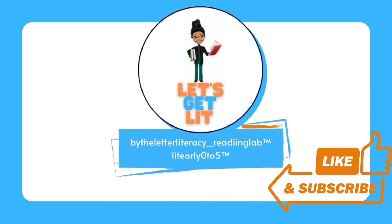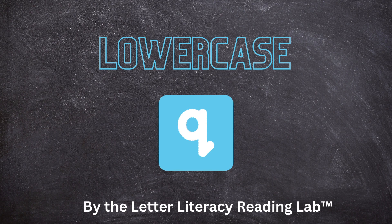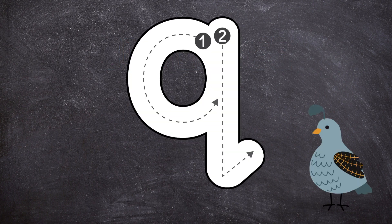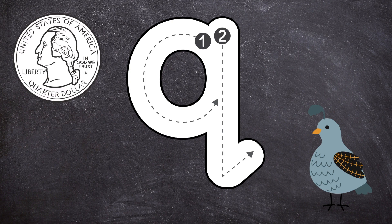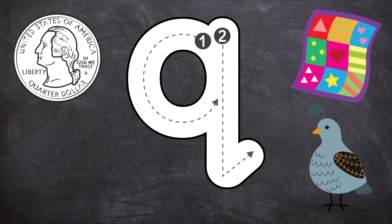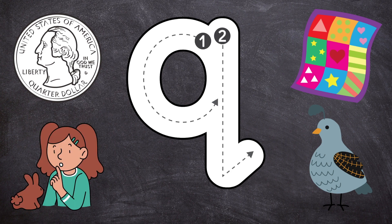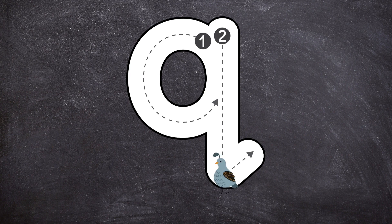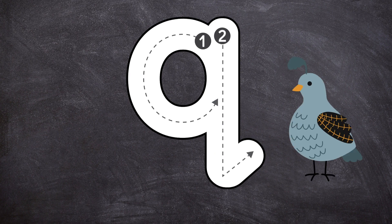Like this video and subscribe to our channel. Lowercase q, lowercase q — as in quail, quarter, quilt, quiet. Let's trace lowercase q: start at the top, curve around and down toward the middle, go back to the top, straight down and up. Q — quail.